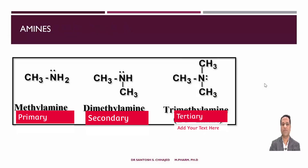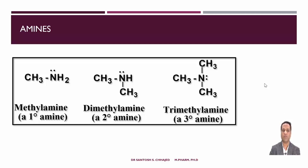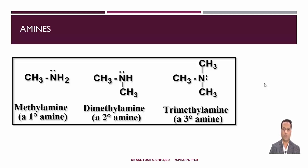If all three hydrogens of ammonia are replaced by three alkyl or aryl groups, which may be the same or different, it is termed a tertiary amine. The simplest example is methylamine, where only one hydrogen is replaced by a methyl group. In dimethylamine, two hydrogens are replaced by two methyl groups. In trimethylamine, all three hydrogens on the nitrogen of ammonia are replaced with methyl groups, making it an example of a tertiary amine.